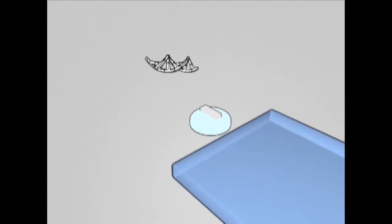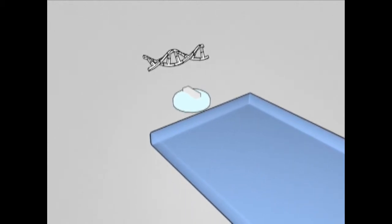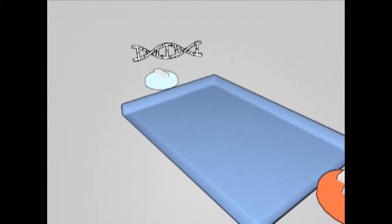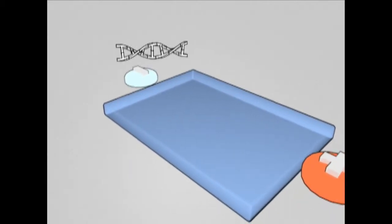Agarose gel electrophoresis is a common method of analyzing samples of plasmid DNA. A tray of agarose gel is prepared with DNA samples placed in wells along one side.